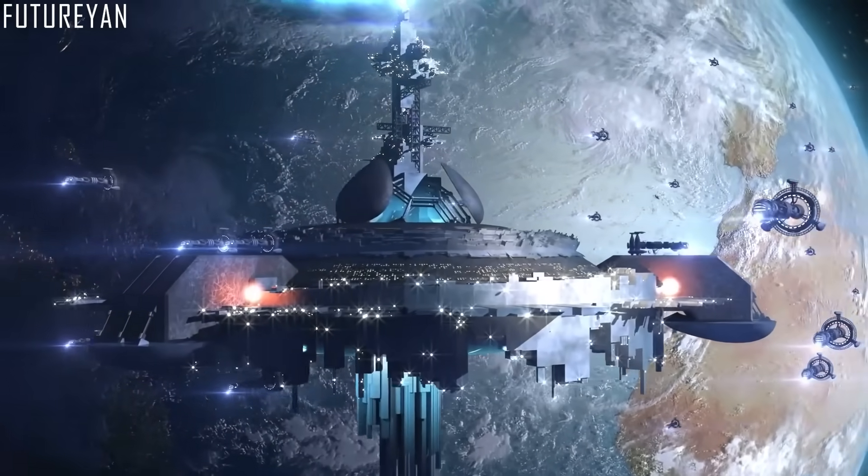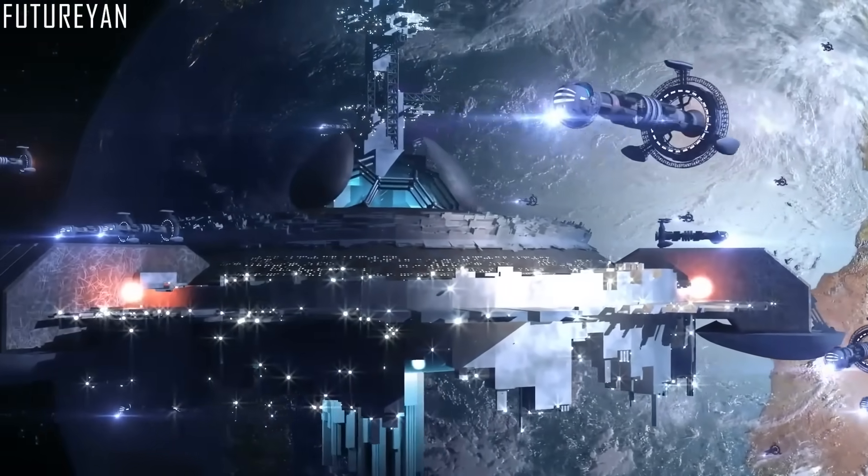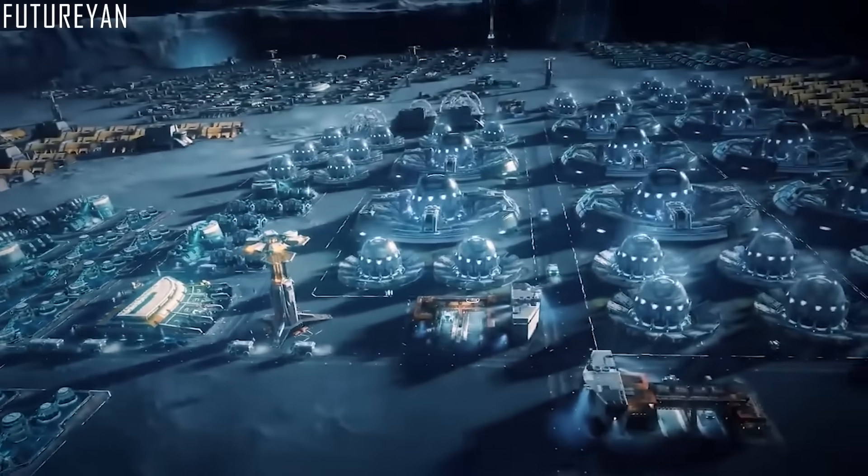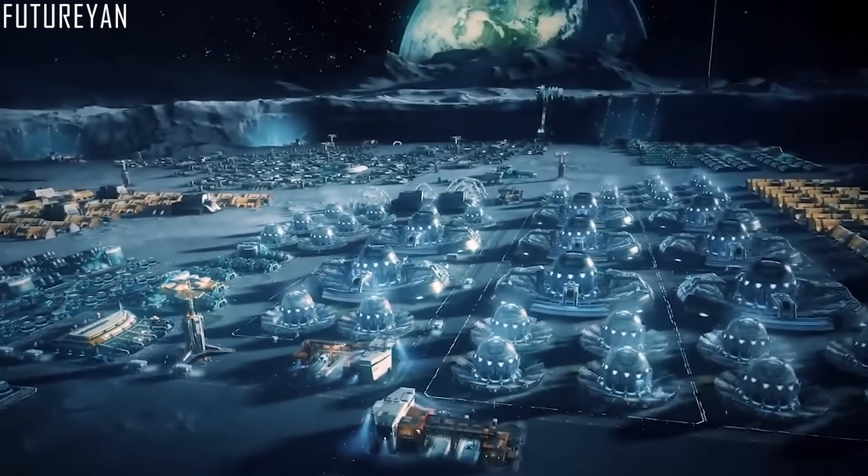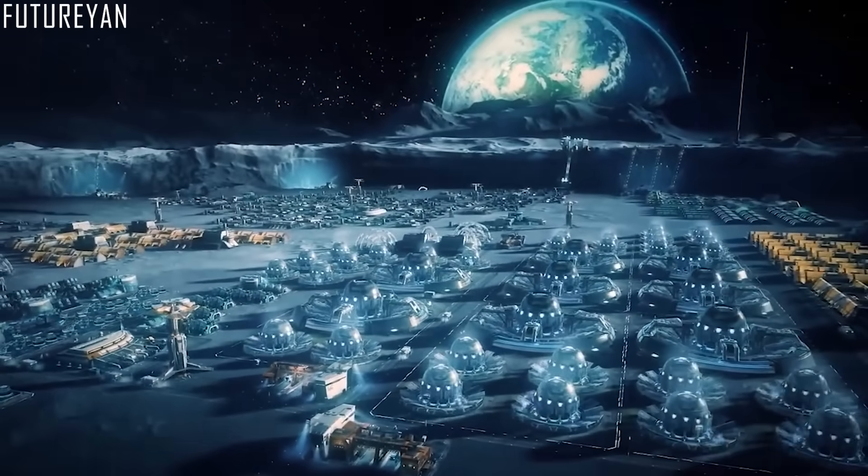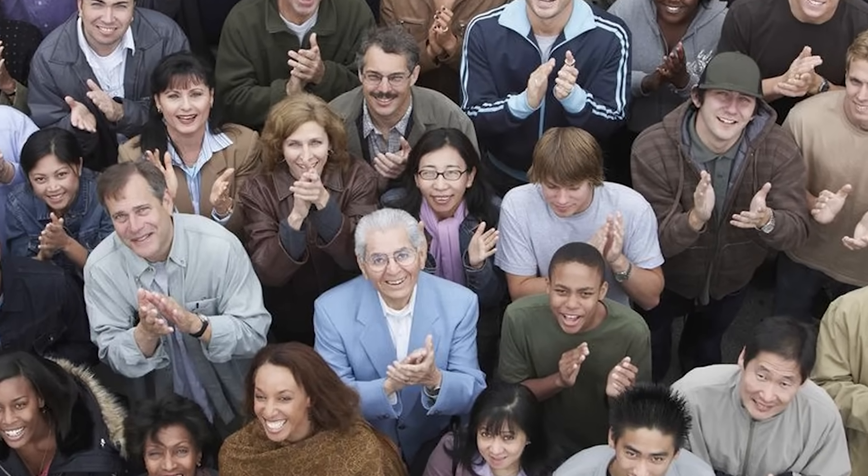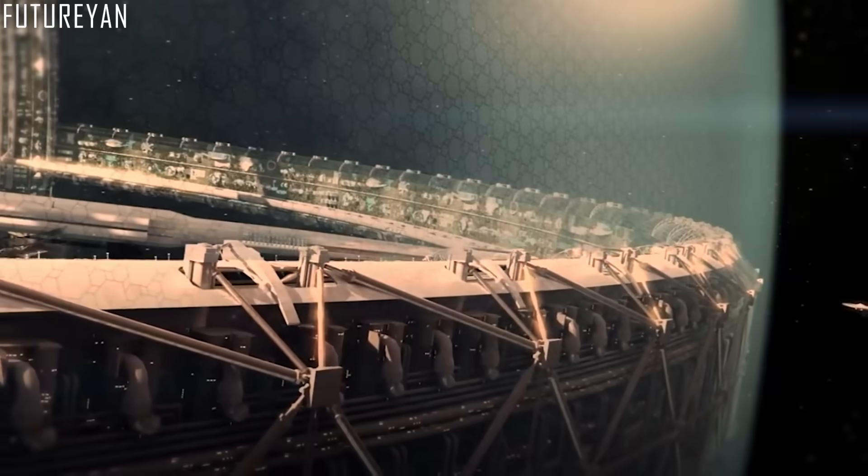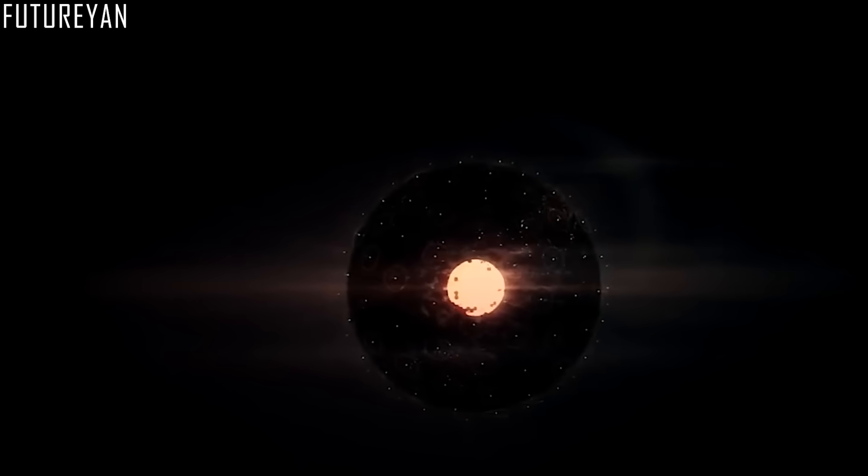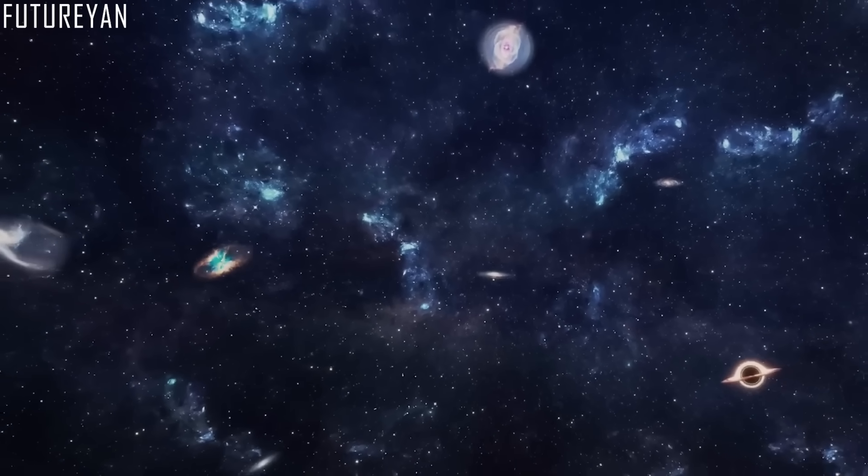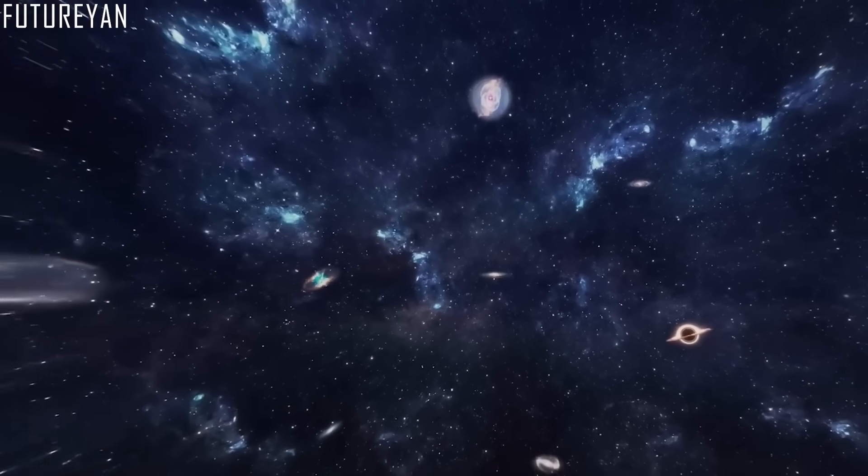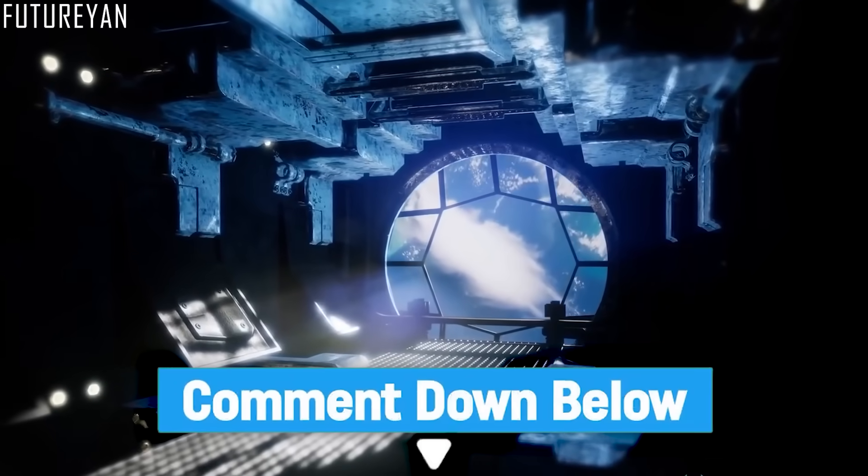Kardashev didn't believe a civilization could progress past a Type III, but some modern scientists disagree and think that a Type IV and Type V may also exist. So it's safe to say that the human race has a long way to go on the path of evolution. What are your ideas about the Kardashev scale? And do you think these recently discovered galaxies may host a Type III civilization? Let us know your views in the comments below.